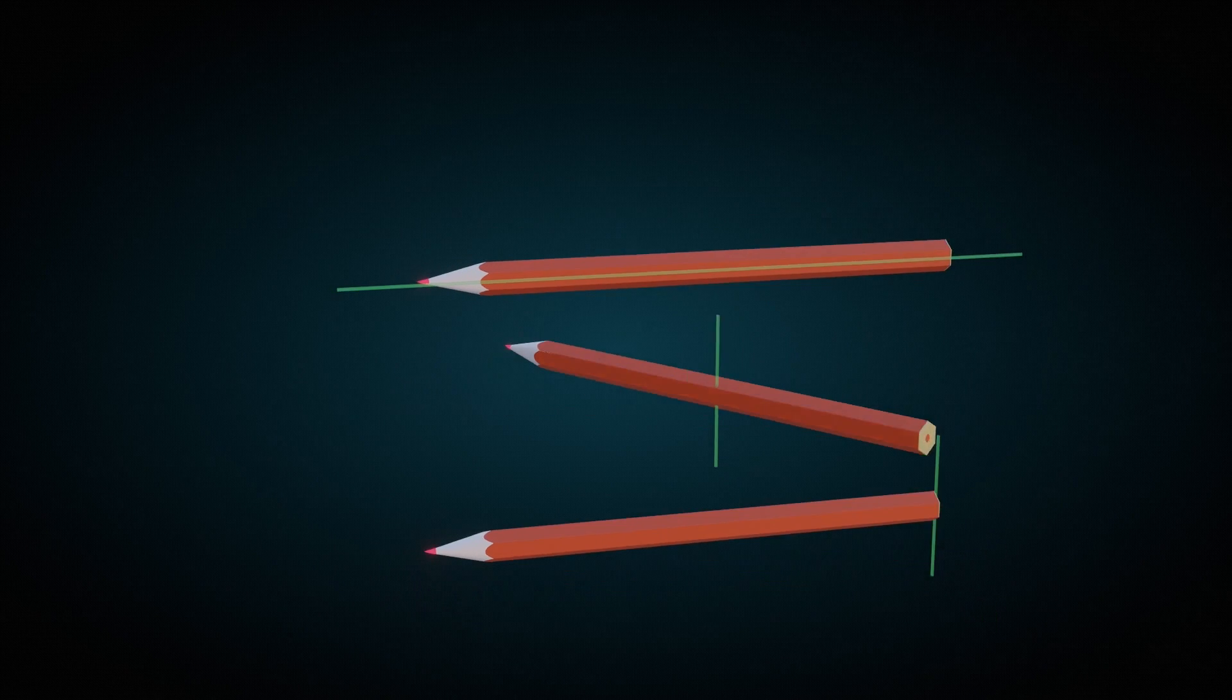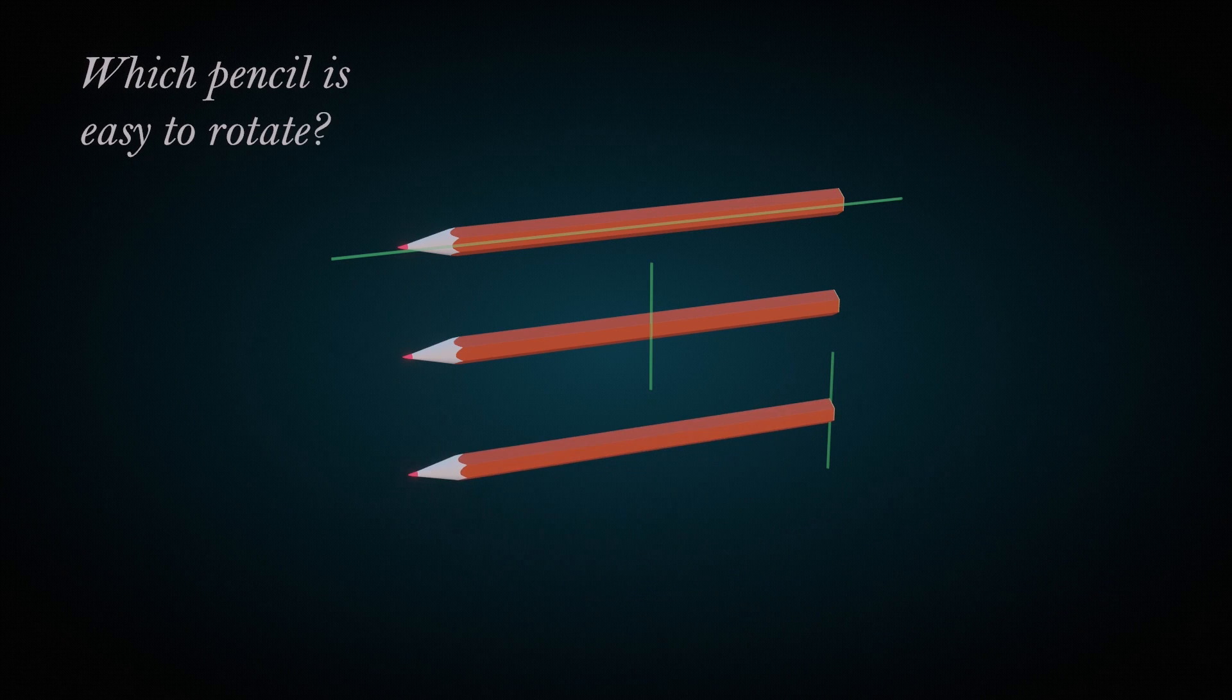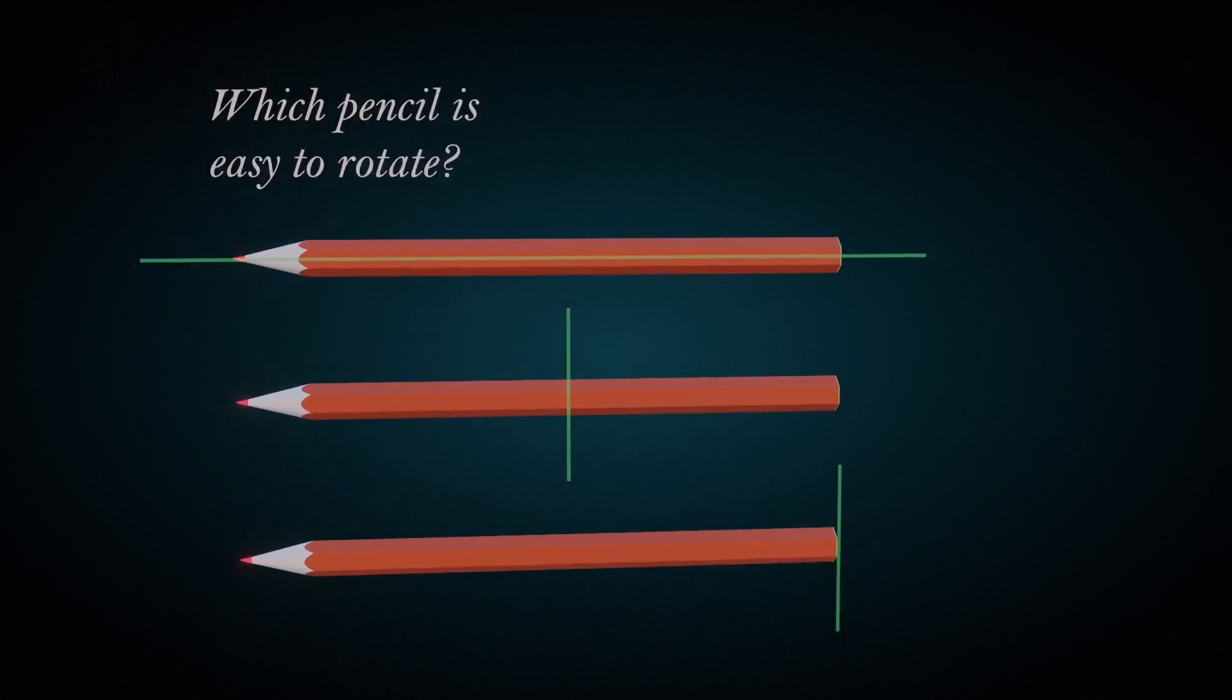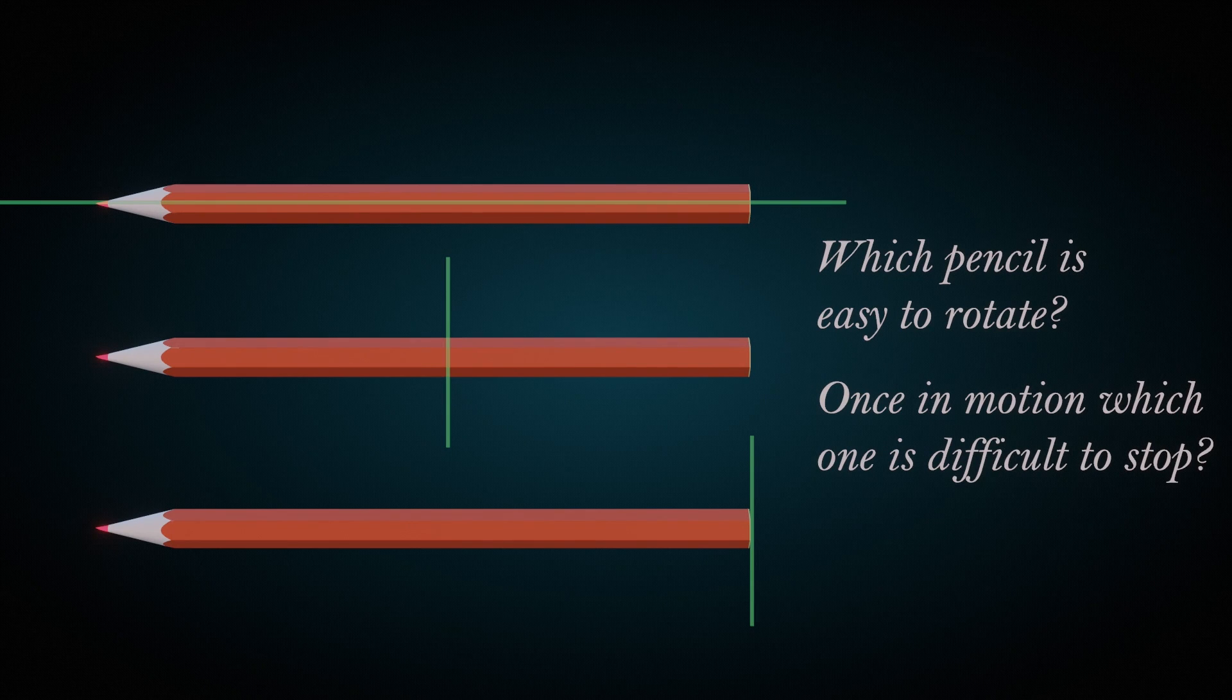Three similar pencils were rotated about different rotational axes. Which pencil is easy to rotate? And once they obtain rotational motion, which one is more difficult to stop?